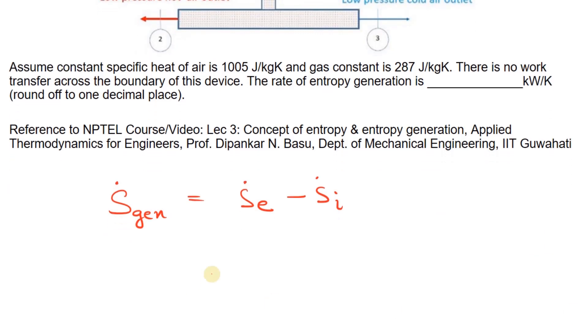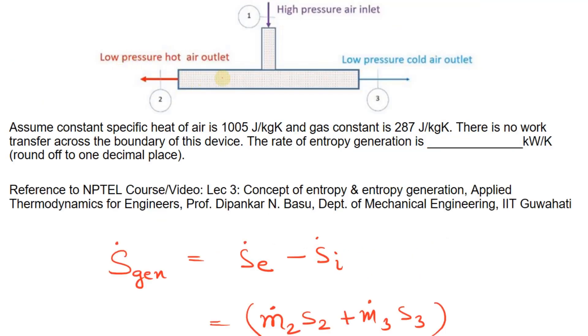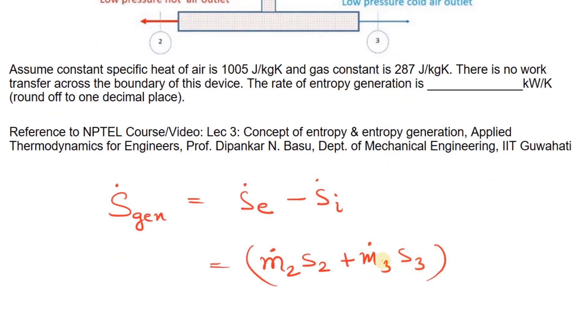We can write this as m2_dot times S2 plus m3_dot times S3, because this is the entropy at exit. S2 is the specific entropy of the hot air and for the cold air it is S3. m3 is the mass flow rate at 3 and m2_dot is the mass flow rate at 2.